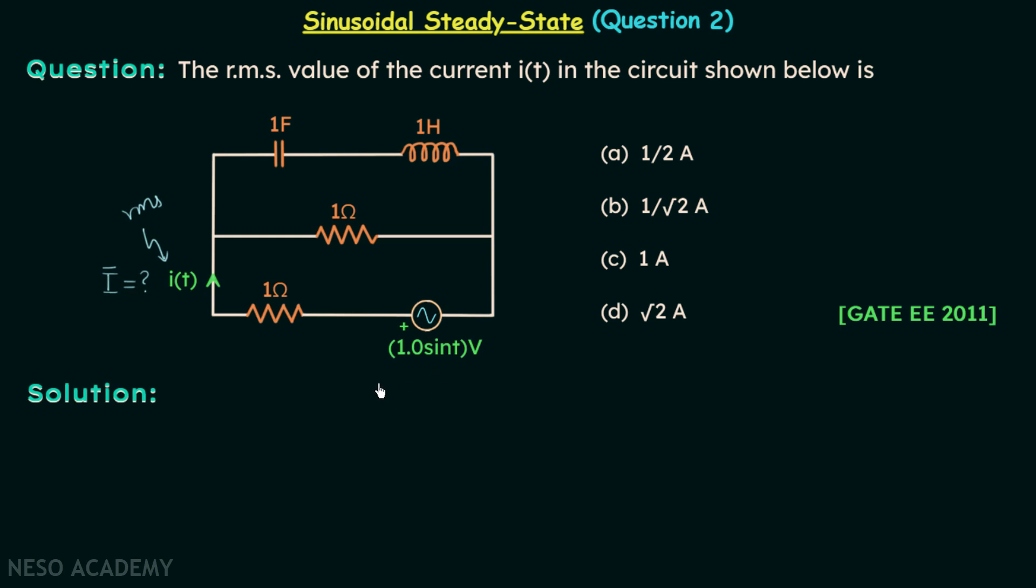The voltage is 1 sin t, in phasor it is equal to 1 angle 0 degree. We are writing the phasor corresponding to the maximum value.